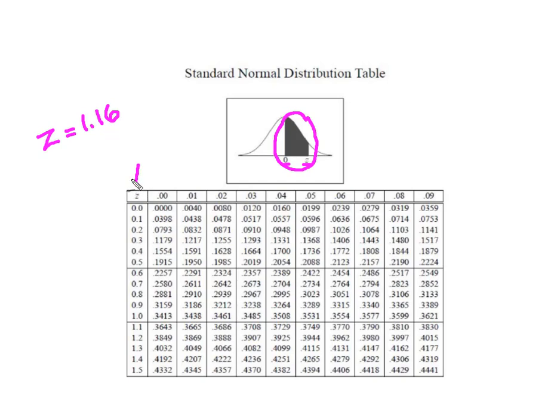So the first thing I'm going to do is begin in the z column and locate these first two values. So here I am at 1.1. Now I need to find my six. So I'm going to come over here and find this column with the six. That gives me 1.16 and I'm going to look for the location where this row and this column intersect.